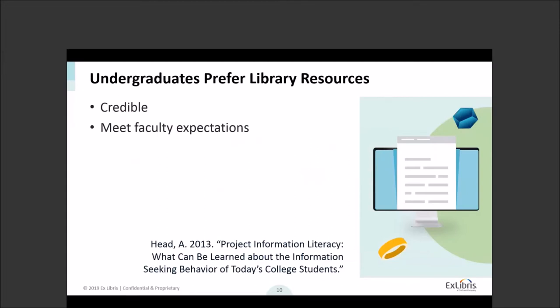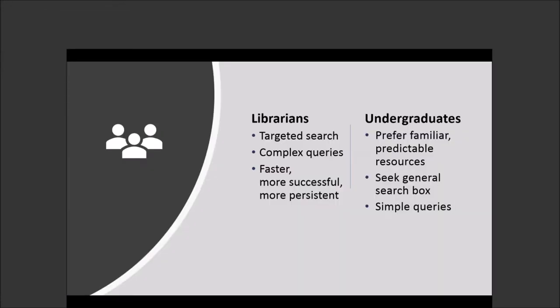A silver lining is that undergraduates do prefer library resources. They want things that are credible and that will meet faculty expectations, so these are a few things working in our favor. When thinking about helping undergraduates, it's important to recognize that we have these very different mental models of the library's resources and, as a result, different search strategies.